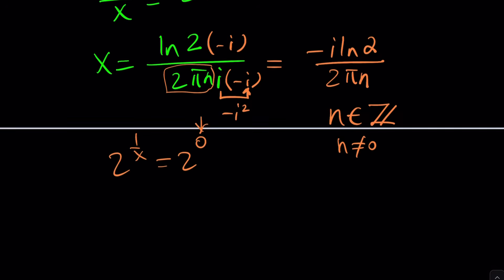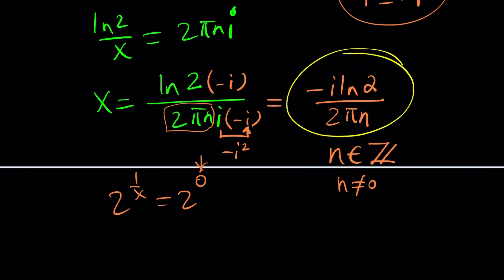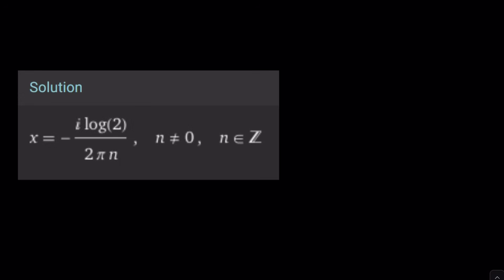By the way, our solution one more time, if you didn't see it. Negative i ln 2 divided by 2 pi n. Negative i ln 2 divided by 2 pi n. Well, Wolfram Alpha just uses this weird notation log for ln, but ln is more appropriate for natural logarithm. In my opinion, I know many textbooks use it. College professors use it. But who cares?